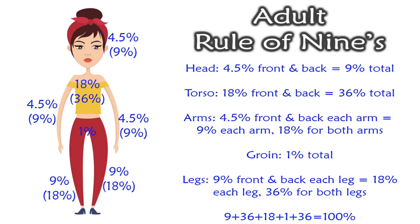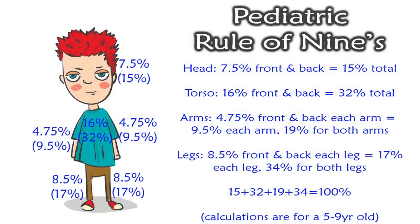So when you add all this up together — 9 plus 36 plus 18 plus 1 plus 36 — equals 100%.